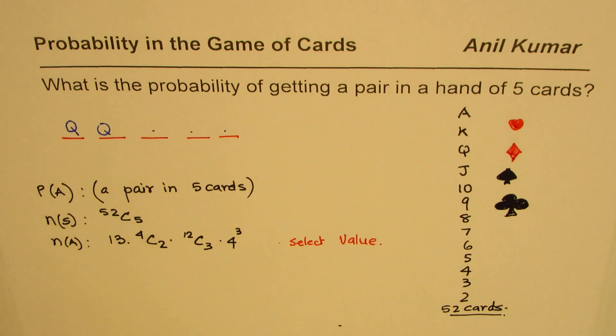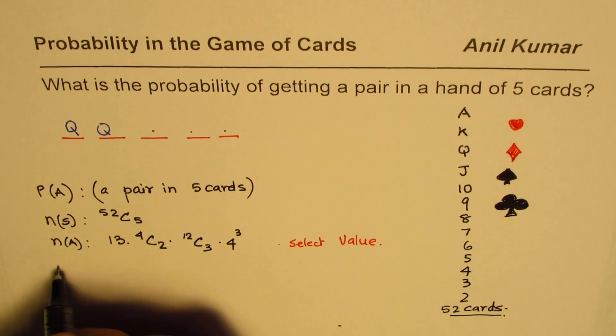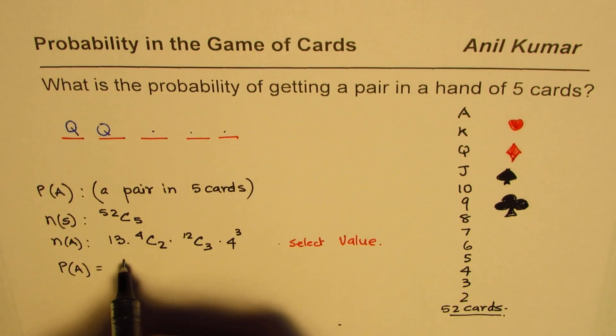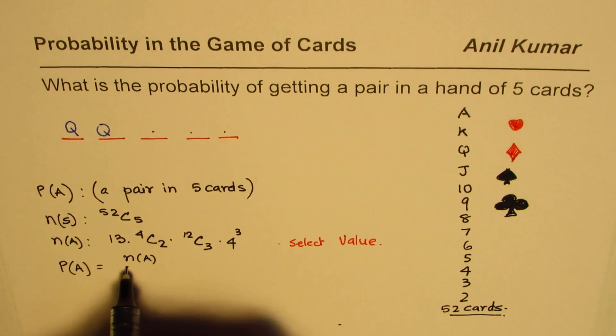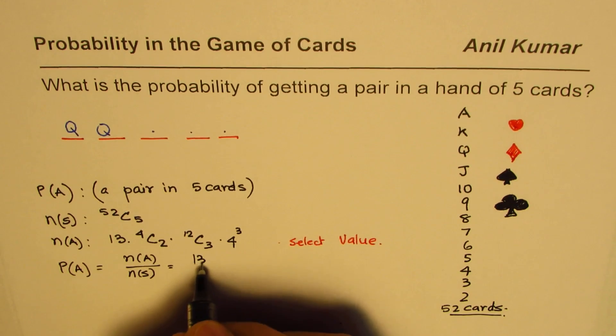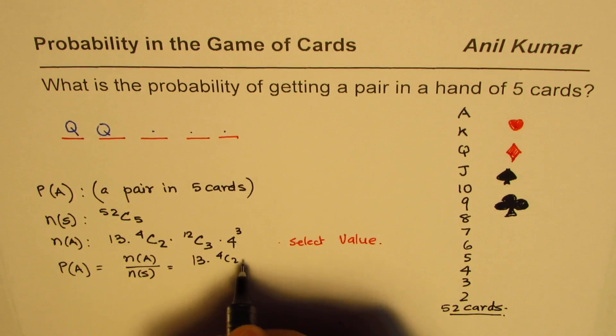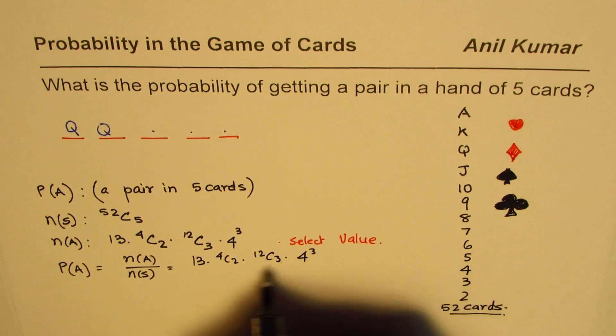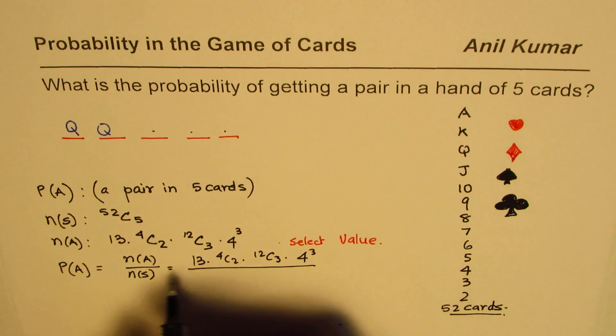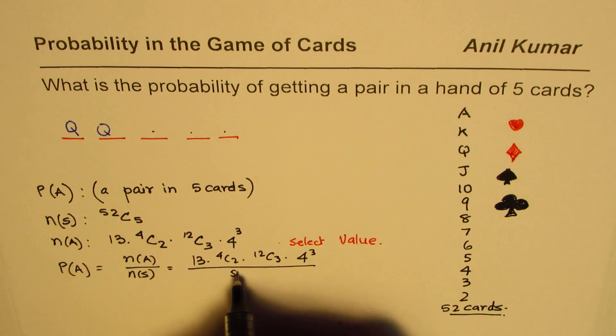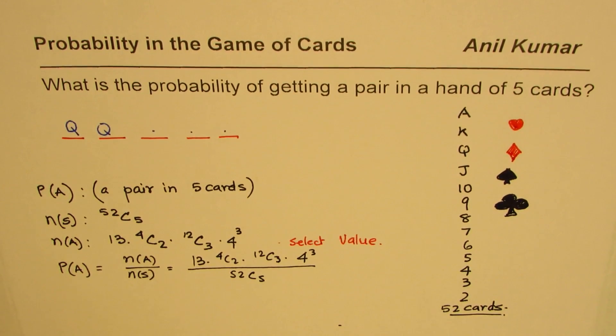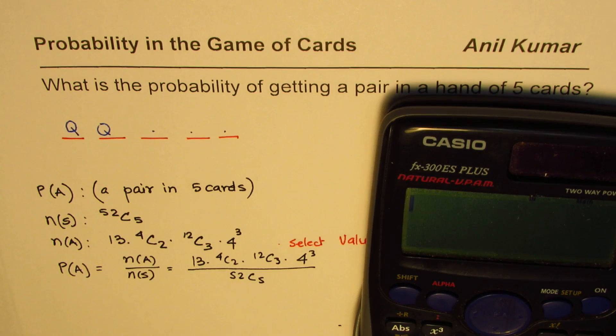Therefore, the probability of this event is equal to the ratio of favorable to total number of outcomes, which could be written as 13 times 4C2 times 12C3 times 4 cubed divided by 52C5. We can use the calculator to calculate this.